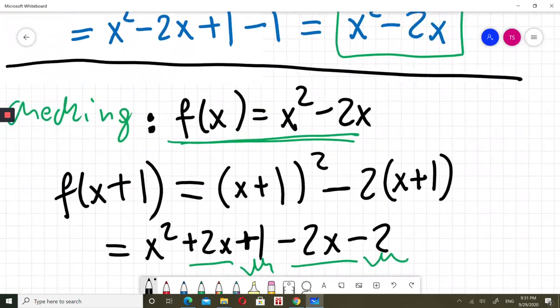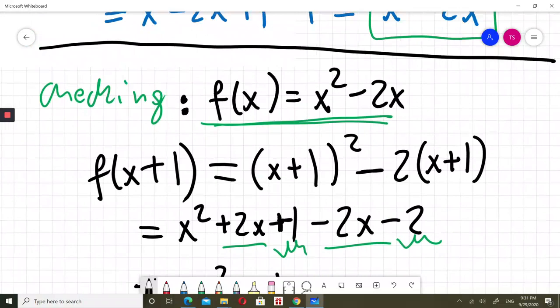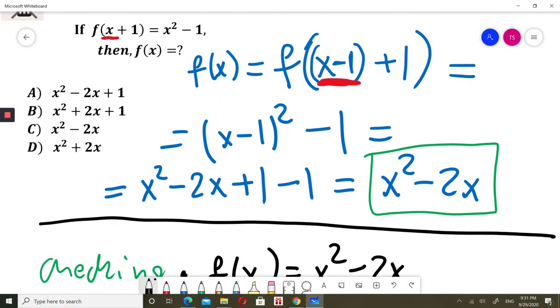So now I'm sure I solved this question correctly. The f of x was x squared minus 2x. So the correct answer for this question is C.